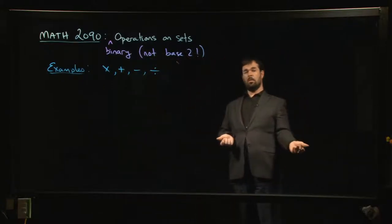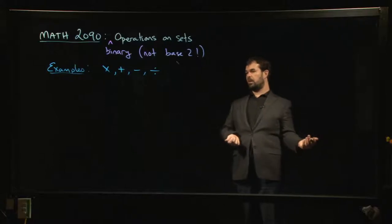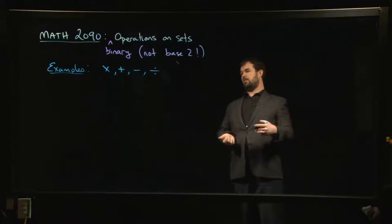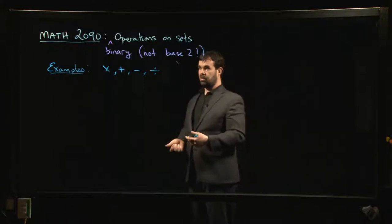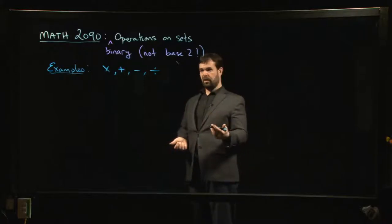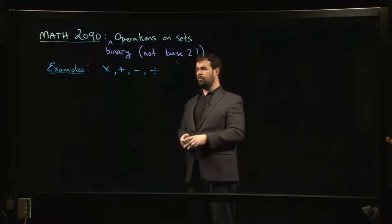these are all examples of binary operations that take two elements of a set as inputs, give you a new element, hopefully of that set, as an output. We talked about the fact that if the output always belongs to the same set as the inputs, then your set is closed under that operation.